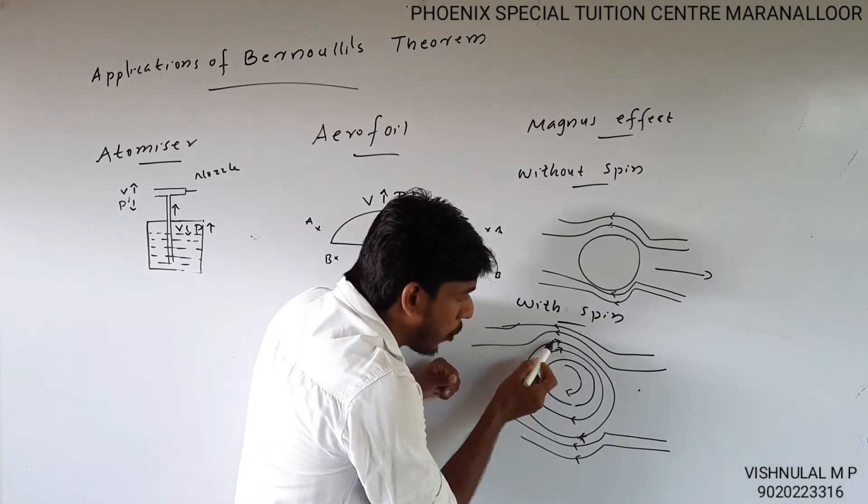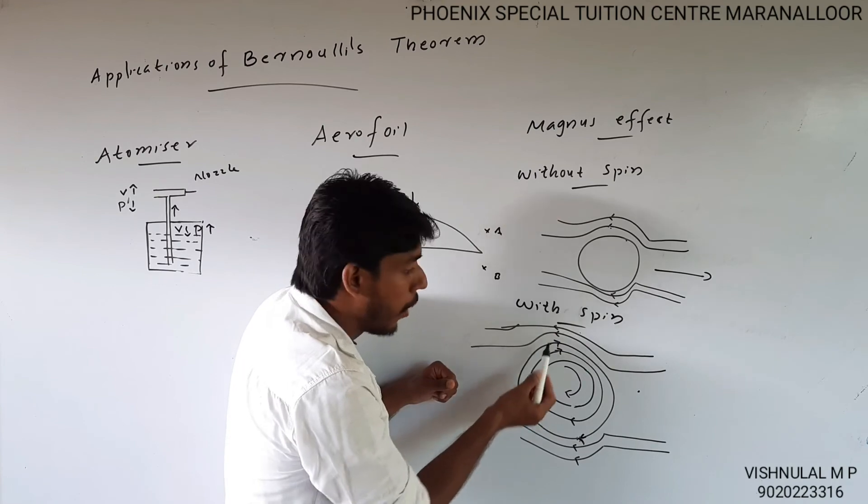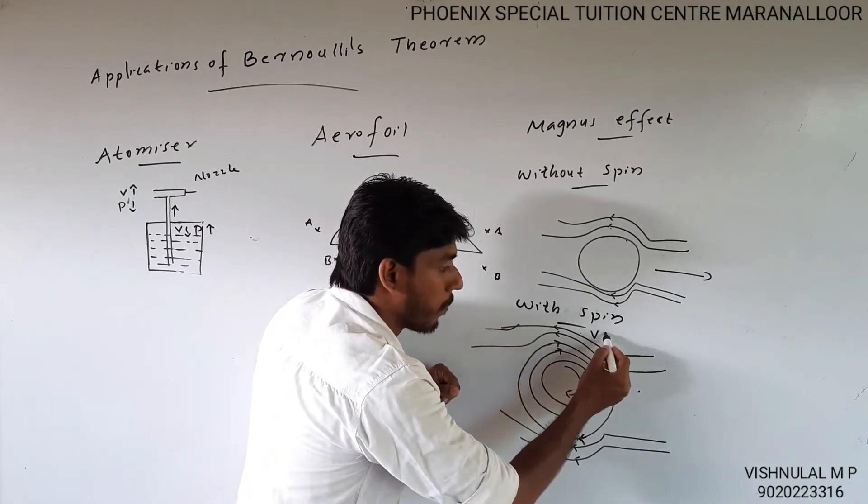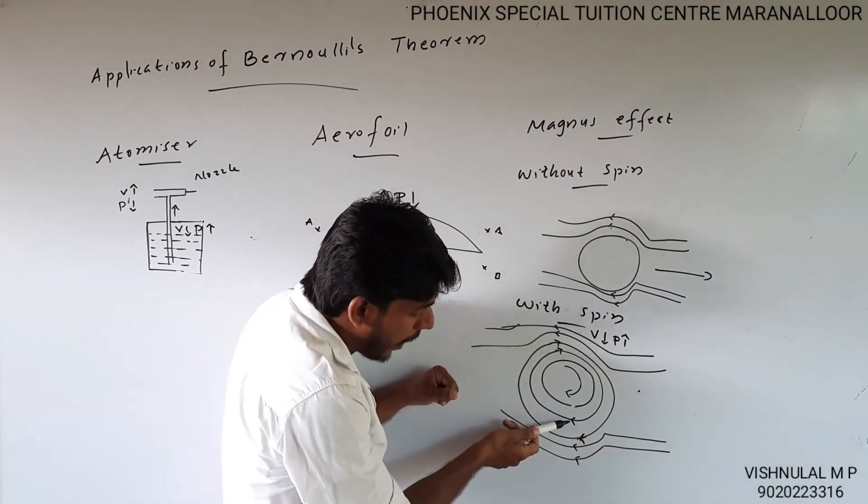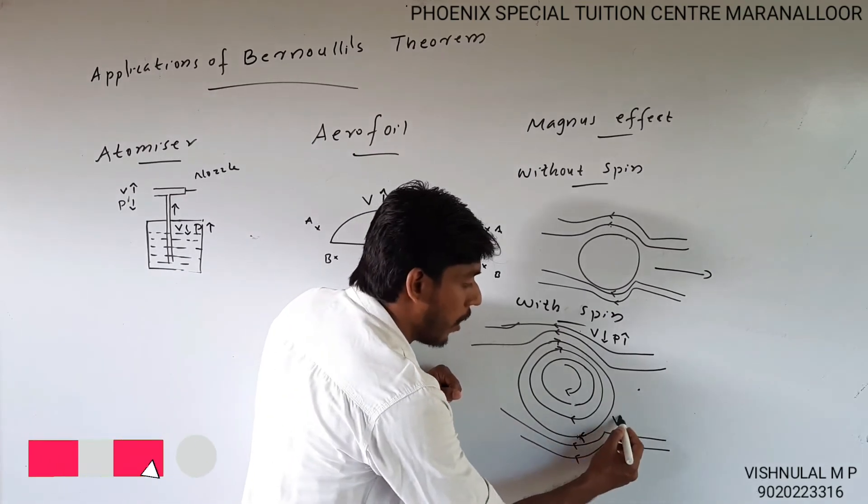This is the forward direction and rotation direction. On one side velocity is higher, so pressure is lower by Bernoulli's theorem. On the other side, velocity is lower, so pressure is higher.